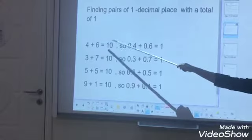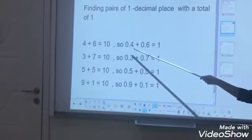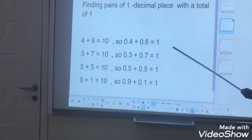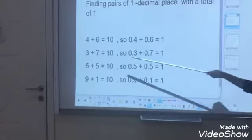4 plus 6. You can write it as a decimal: 0.4 plus 0.6 equals 1. Here also you can see the examples.